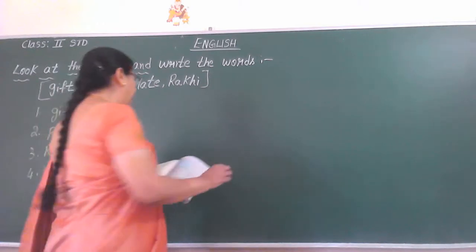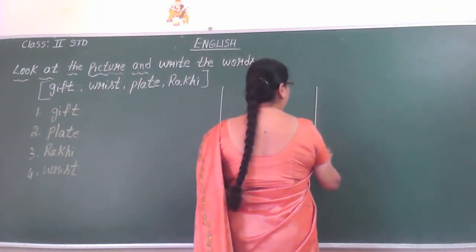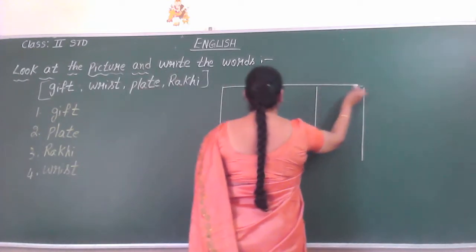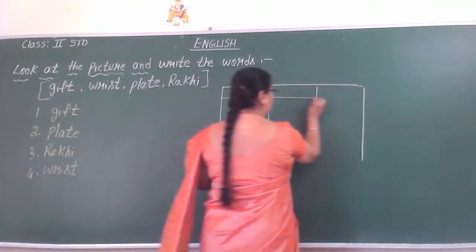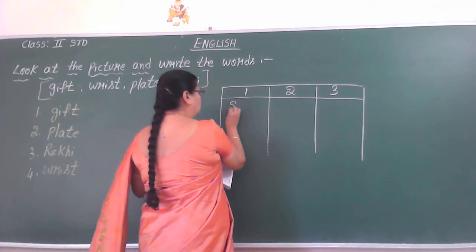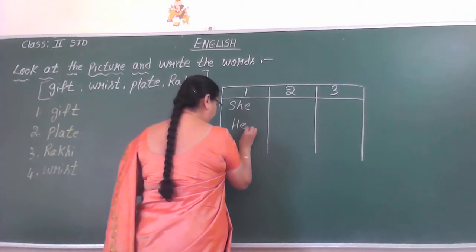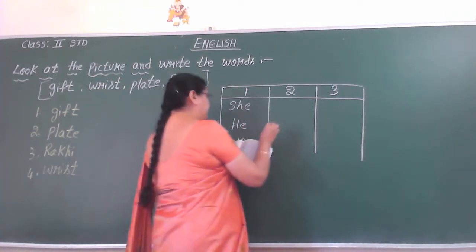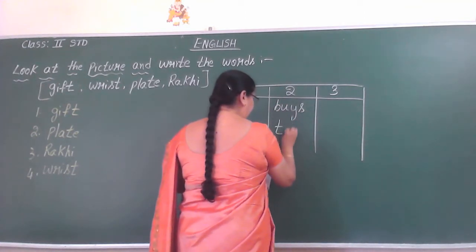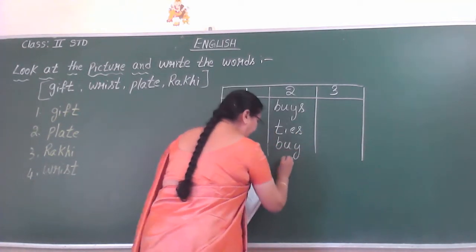In the three columns — first column, second, there are three columns. The first column has: she, he, and we. The second column has: buys, ties, bite, and tight.